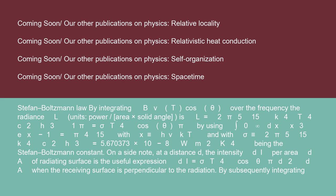By the Stefan-Boltzmann Law, integrating B(ν,T)·cosθ over frequency, the radiance L (units: power per area per solid angle) is L = (2π⁵/15) · k⁴T⁴/(c²h³) · (1/π) = σT⁴·cosθ/π, using the integral ∫₀^∞ x³/(e^x − 1) dx = π⁴/15 with x ≡ hν/kT, and σ ≡ 2π⁵k⁴/(15c²h³) = 5.670373 × 10⁻⁸ W·m⁻²·K⁻⁴ being the Stefan-Boltzmann constant.